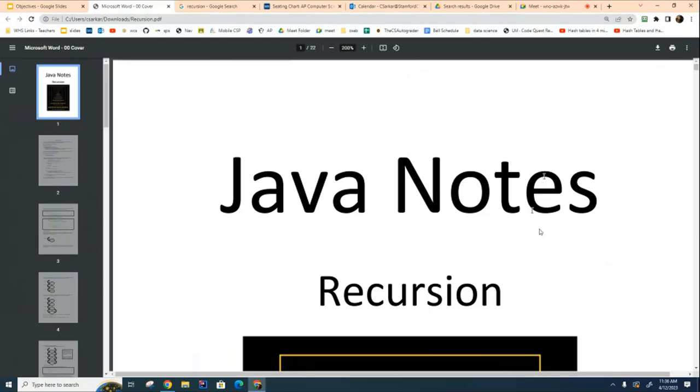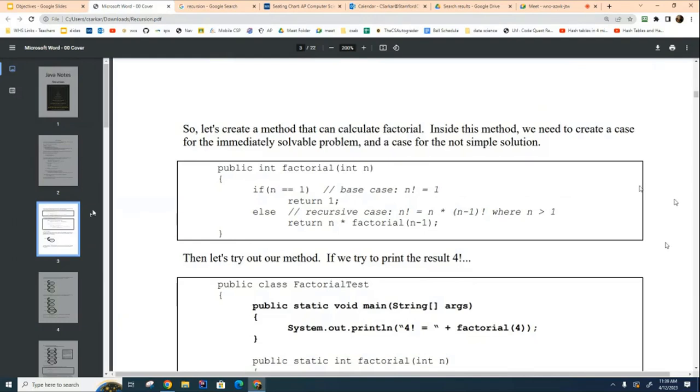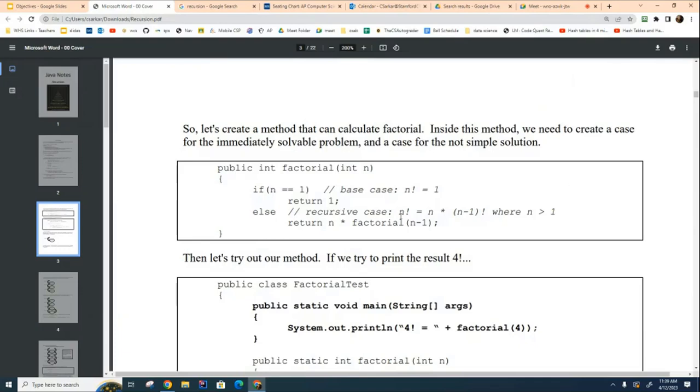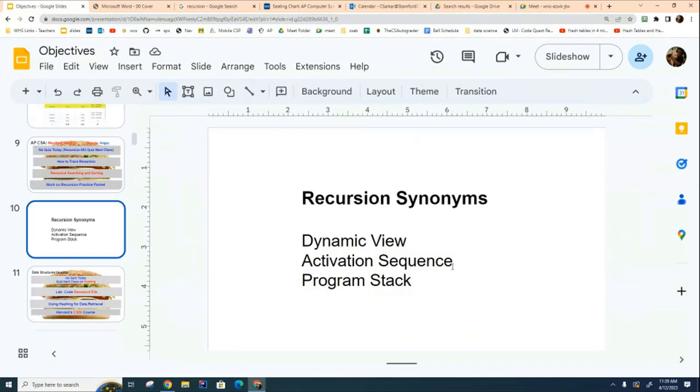Okay, we're going to start off on page three, which is this page right here, and you can see that there is a simple recursive definition of the factorial problem right here. As I mentioned to you before, this is called the static view where we're just looking at the method without writing anything on top of it. The static view is useful for us to read initially but doesn't really tell us what any particular input is going to produce. So to do that we need to draw a dynamic view. The dynamic view also has two other synonyms that basically mean the same thing—it also refers to the activation sequence or the program stack.